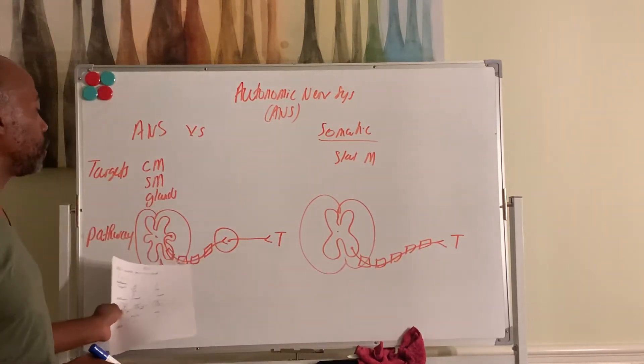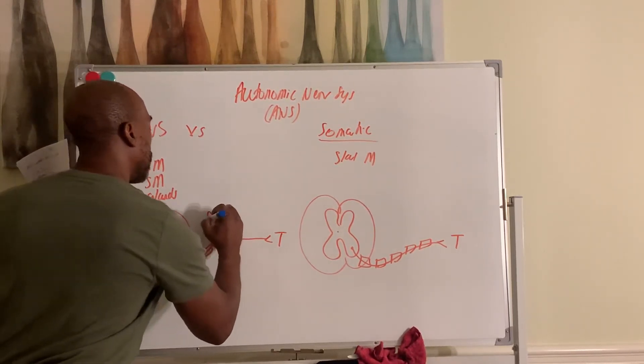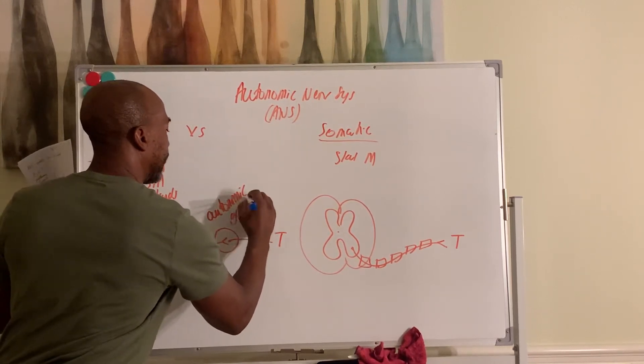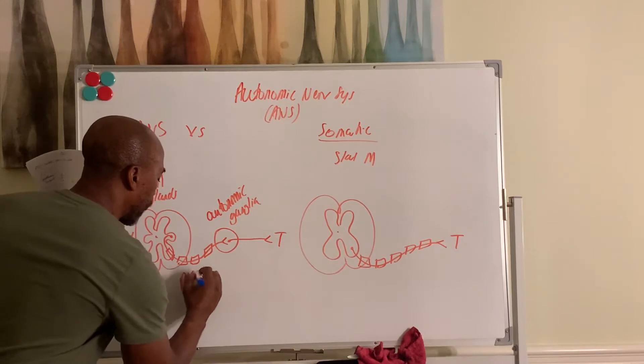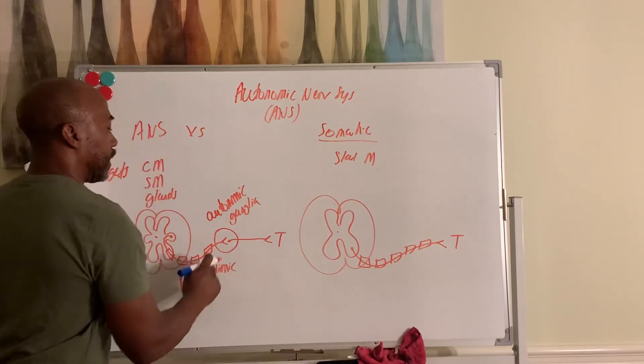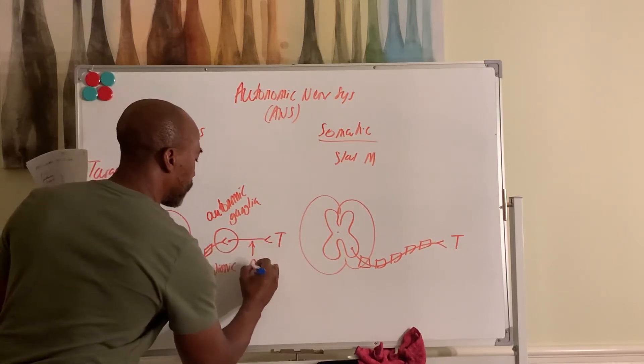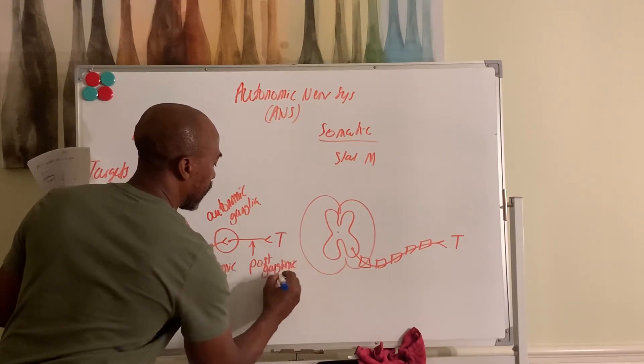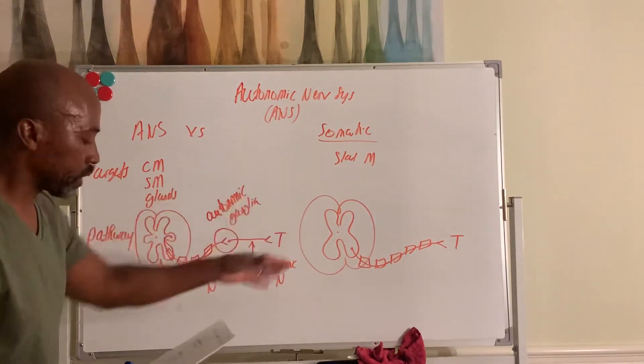And it's a single neuron pathway from the CNS to the target. Here in the ANS, it's a two neuron pathway, where the first neuron stops in a ganglia called the autonomic ganglia. And the first neuron, which is myelinated, is called the preganglionic neuron. The second neuron, which goes to the target, is called the post-ganglionic neuron. So that's different between both of them. One is a two neuron, one is a one neuron pathway.